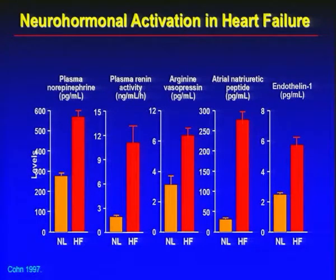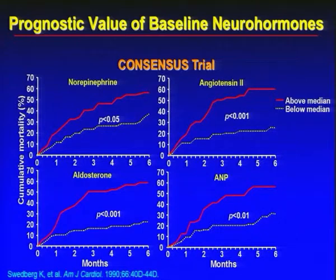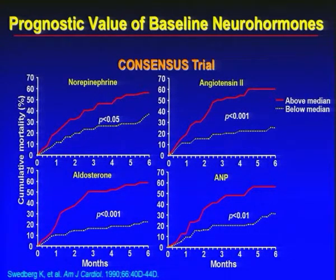We learnt long ago that in heart failure neurohormones are activated - some of them are good, some of them are not good. Kohn showed in 1997 that plasma norepinephrine, renin activity, arginine vasopressin, natriuretic peptides and endothelin-1 are all elevated in patients of heart failure as compared to normal people. We also learnt several decades ago that these have a prognostic value. In the CONSENSUS trial it was shown that elevated levels of norepinephrine, angiotensin-2, aldosterone and atrial natriuretic peptides were all associated with increase in cumulative mortality.